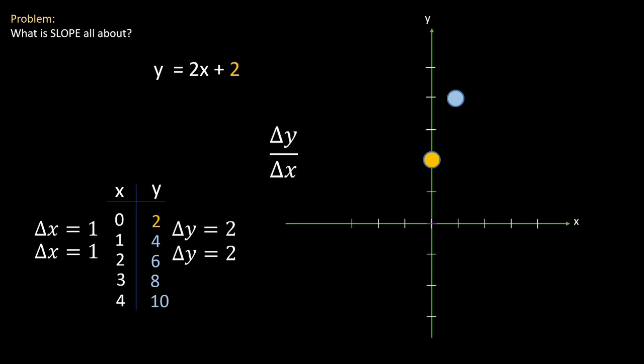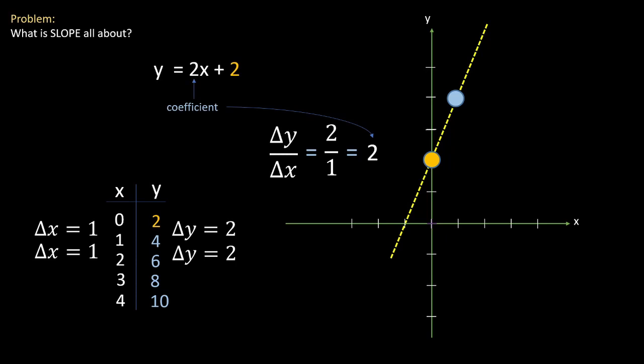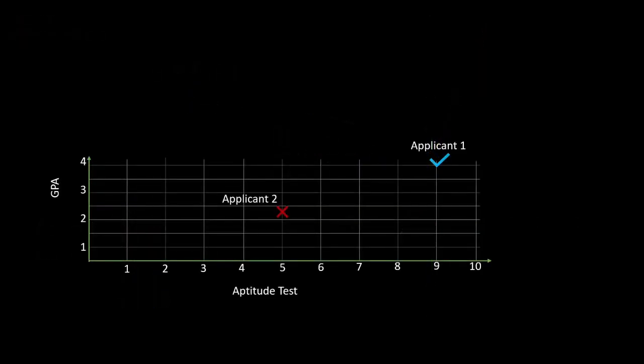Ultimately this is just a fraction — the change in y over the change in x — which gives us our slope. We can join the two points and the slope of our line is two. It's no coincidence that the two beside the x and the two we end up with become our coefficient. We call this our coefficient.